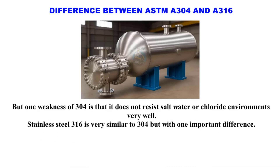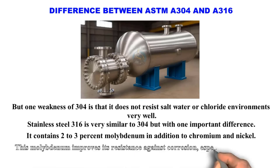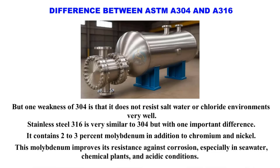Stainless steel 316 is very similar to 304 but with one important difference. It contains 2 to 3 percent molybdenum in addition to chromium and nickel. This molybdenum improves its resistance against corrosion, especially in seawater, chemical plants, and acidic conditions.